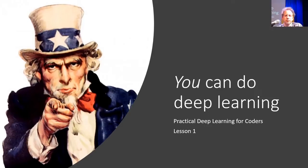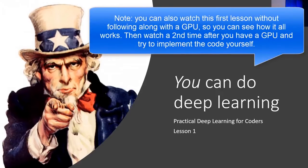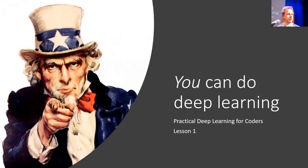Welcome to Practical Deep Learning for Coders, lesson one. It's kind of lesson two because there's a lesson zero — lesson zero covers why you need a GPU and how to get it set up. If you haven't got a GPU running yet, go back and do that, make sure that you can access a Jupyter notebook, and then you're ready to start the real lesson one.